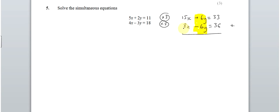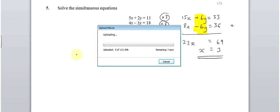So 15 and 8 make 23x. Add them. You get nothing. Add these two. And you get 69. And divide both sides by 23. And 23 times 3 is 69. So x equals 3.